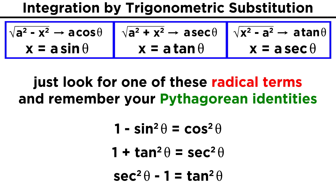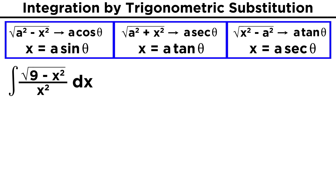However, this substitution and simplification is only the first part of the technique. To see what else there is to it, let's look at a specific example to see why this substitution becomes useful. Take something like the integral of root nine minus x squared over x squared dx. We look at this radical term, and we see that it is one of the expressions that qualify this for trig substitution. In this particular case, we are going to change x into a sine theta, and for this example, if the term starts with nine, then nine must be a squared, so a will be three.